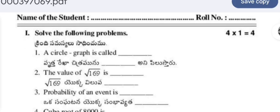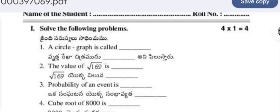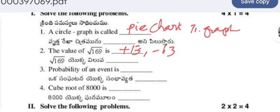Solve the following problems. Four questions of one mark each are given — you will get four marks for all correct answers. A circle graph is called a pie graph or pie chart. The value of √169 is +13 or −13. Probability of any event is defined as the total number of favorable outcomes divided by the total number of outcomes.